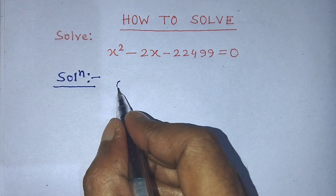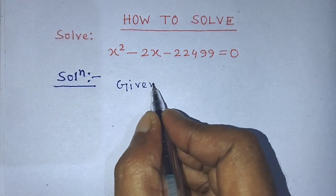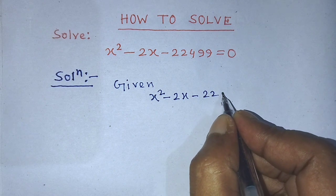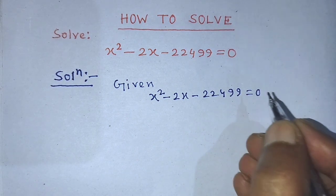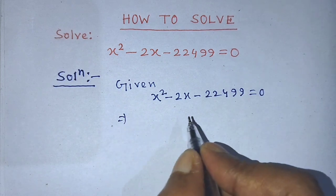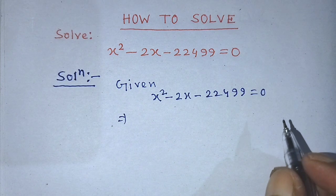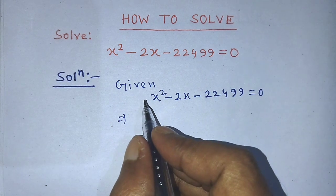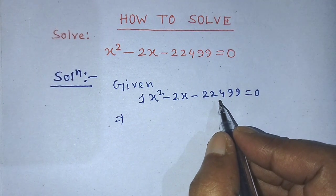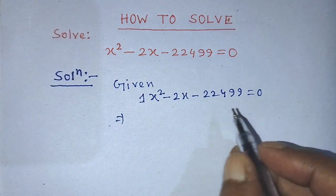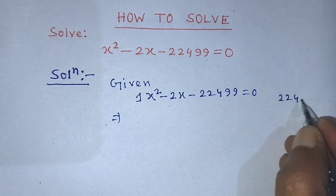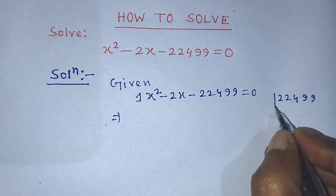So our given algebraic equation is x squared minus 2x minus 22,499 is equal to 0. To find the value of x from this equation, we have to factorize the left-hand side. To factorize it, first of all we have to multiply the coefficient of x squared and the constant term, which is 22,499.